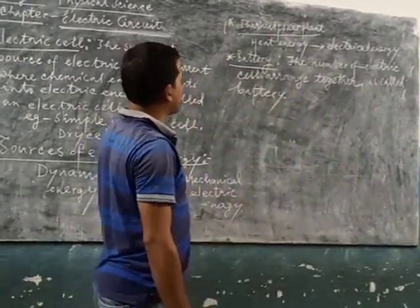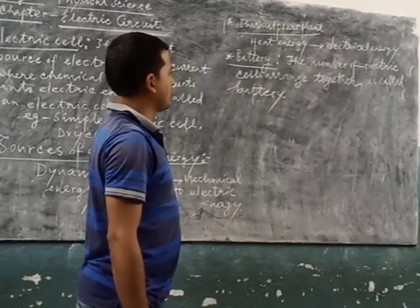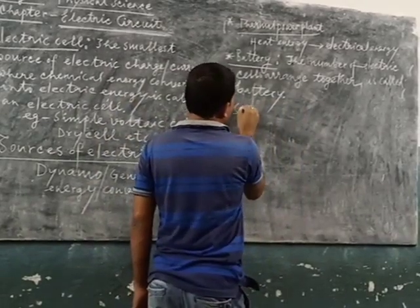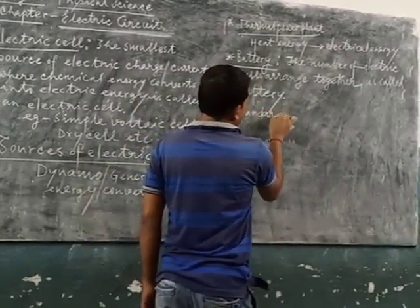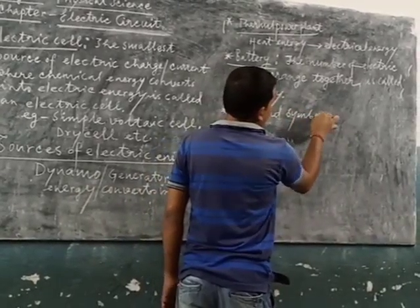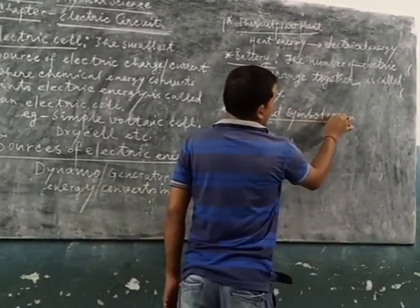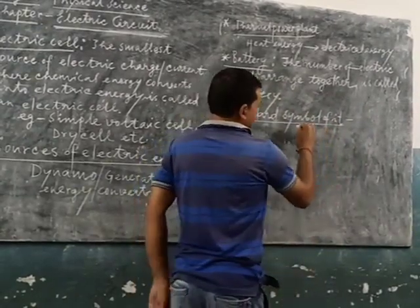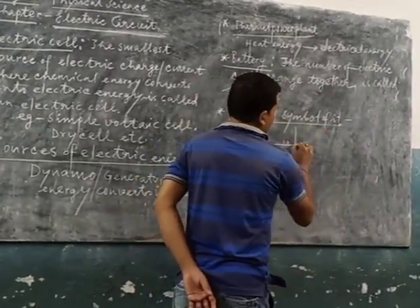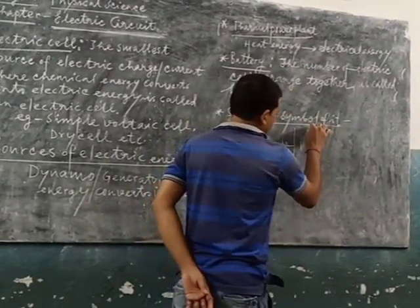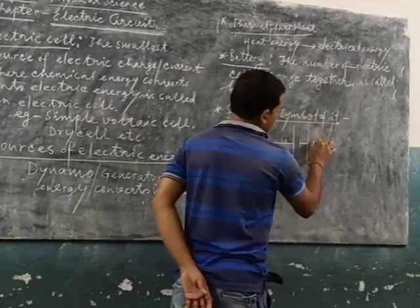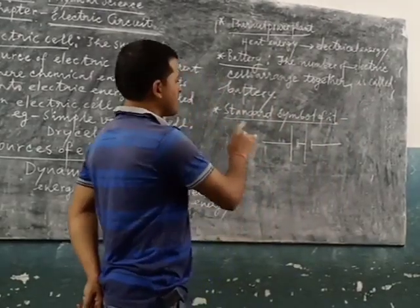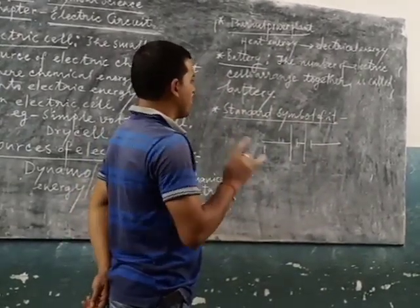The number of electric cells arranged together is called a battery. The standard symbol of a battery shows a positive terminal and a negative terminal. Similarly, an electric cell also has a positive terminal and a negative terminal. In a battery, two electric cells are used, connected one by one.